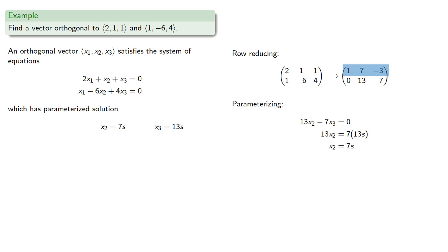Likewise, the first row gives us the equation x1 + 7x2 - 3x3 = 0. We know what x2 and x3 are, so we can substitute those in and find x1.